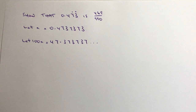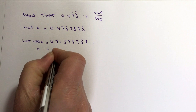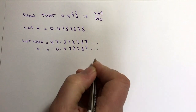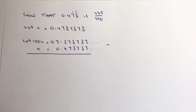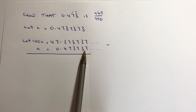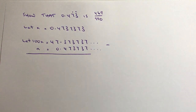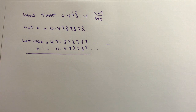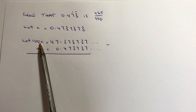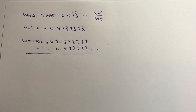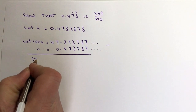That means if I take away the value of n, which is 0.473737, it will allow me to take away the recurring elements of these numbers, because 7 take away 7 is 0, and 3 take away 3, and so on. So I've got 100n take away n, which is 99n.